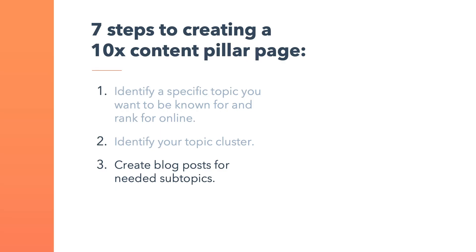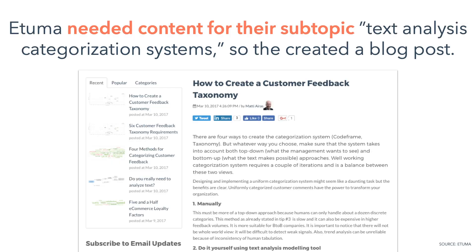Third, create blog posts for needed subtopics. Etuma needed content for their subtopic, Text Analysis Categorization Systems. So they created a blog post titled, How to Create a Customer Feedback Taxonomy. Once Etuma created this article, they had a blog post for each one of their six subtopics.